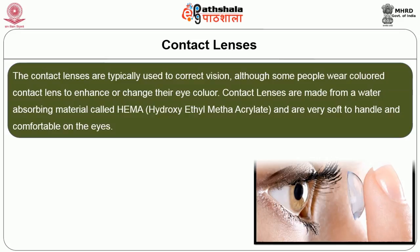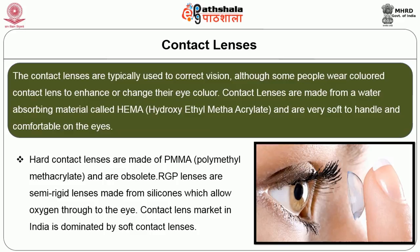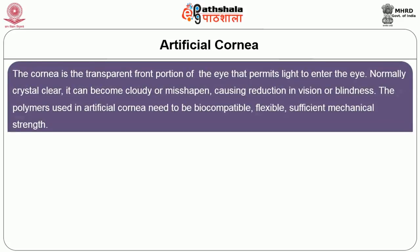Contact lenses are typically used to correct vision, although some people wear colored contact lenses to enhance or change their eye color. Contact lenses are made out of a water-absorbent material called HEMA and are very soft to handle and comfortable to the eyes. Hard contact lenses are made out of PMMA. RGP lenses and semi-rigid lenses made out of silicone, which allow oxygen through the eye, are also available. The contact lens market in India is dominated by soft contact lenses.